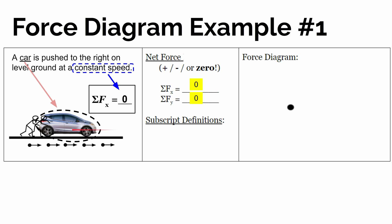And if this is moving on level ground, there is no motion in the y direction — no vertical motion. So it's kind of like vertically at rest, and that would be an example where the sum of the forces in y is also zero.